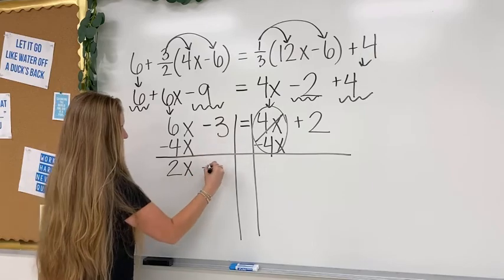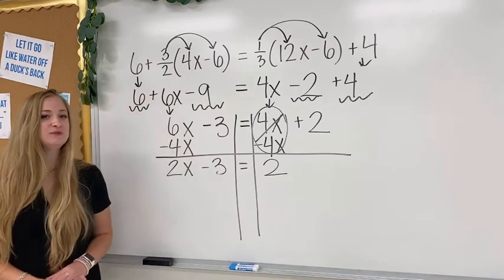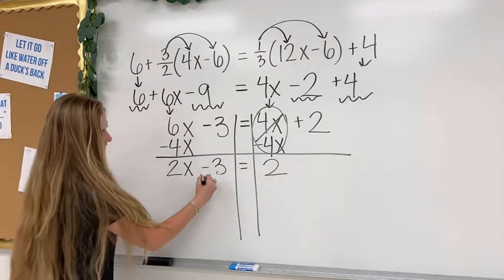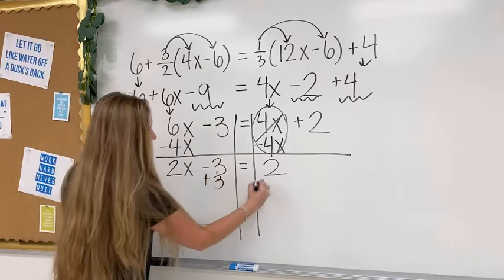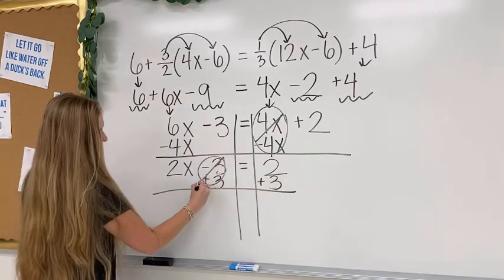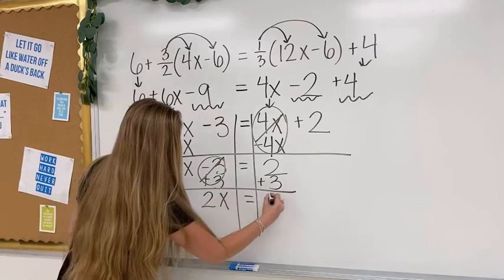Then I just bring down everything else. Now we're down to a two-step problem. I'm going to cancel out the negative 3 by doing the inverse operation, which is add 3 on both sides. That's my zero pair, and I bring down my 2 times x, and that gives me 5.